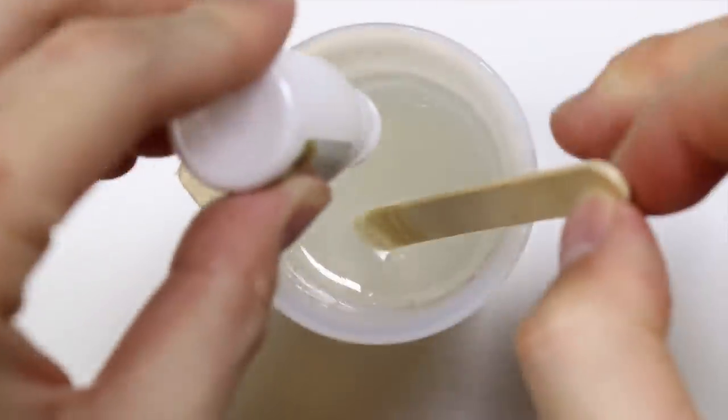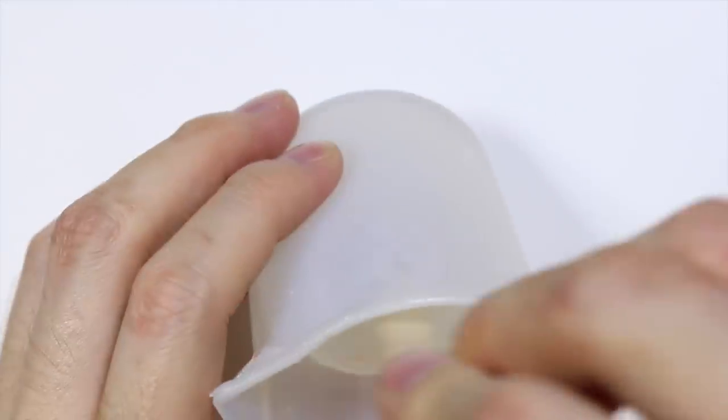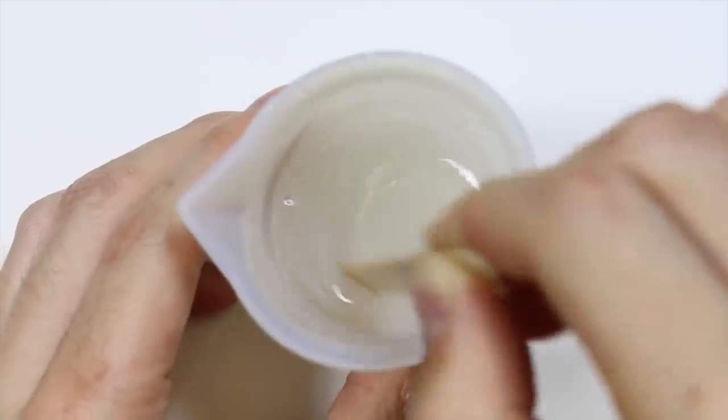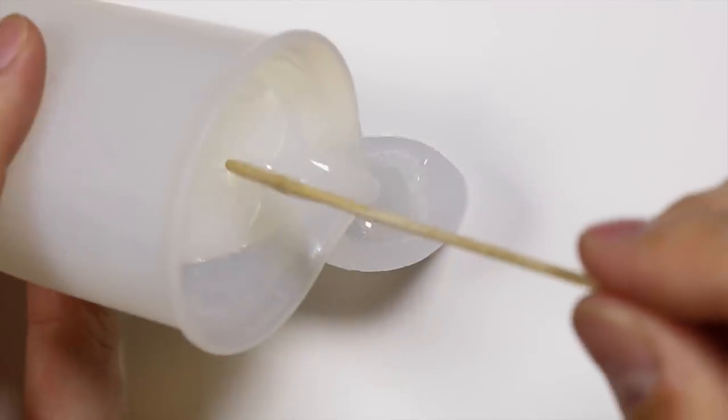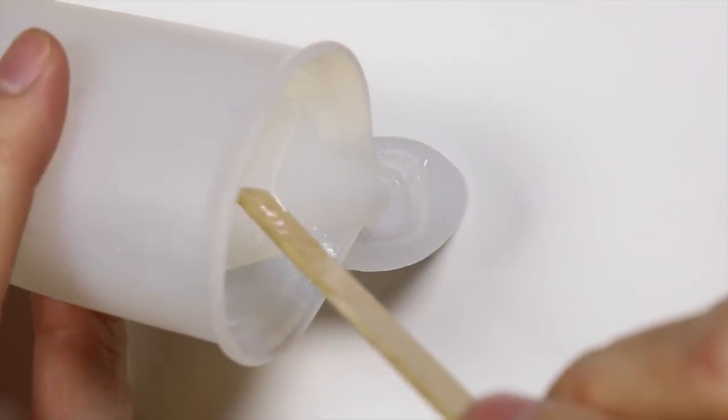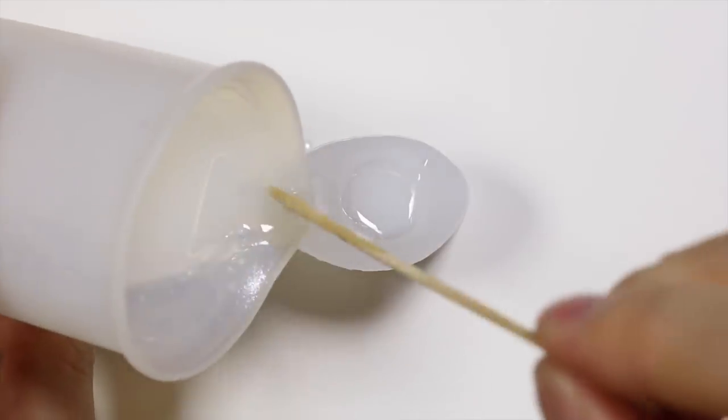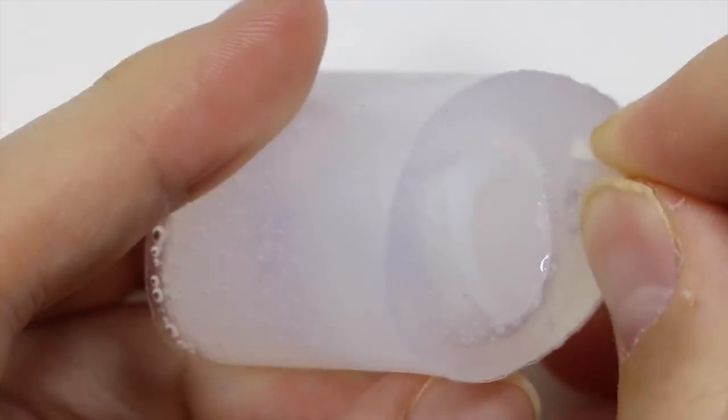Next I'm taking some resin and I'm pouring white pigment into it to make it into a nice opaque white color. And I'm filling the mold with the white resin and letting that cure for 24 hours because I use two-part resin for this project.